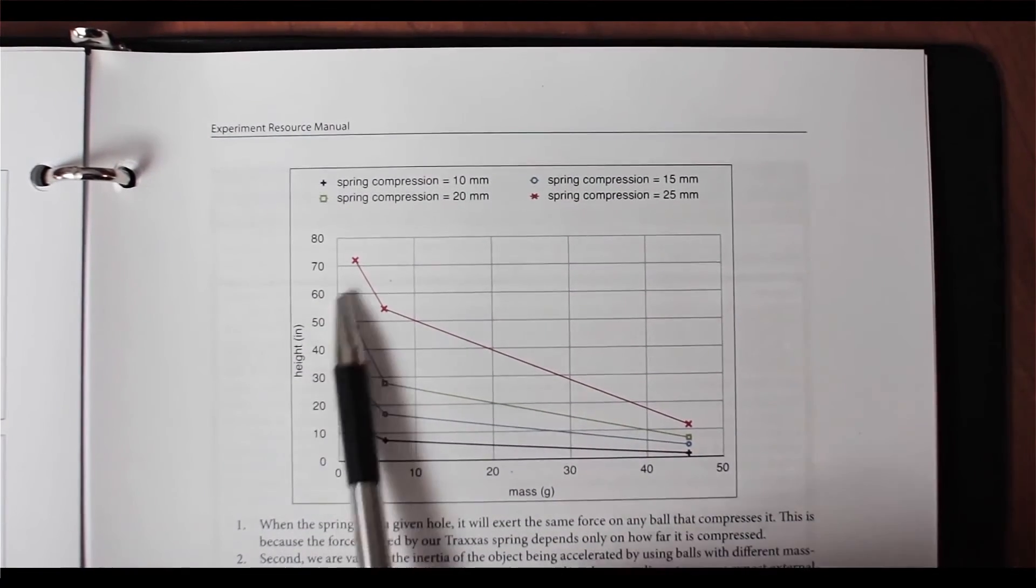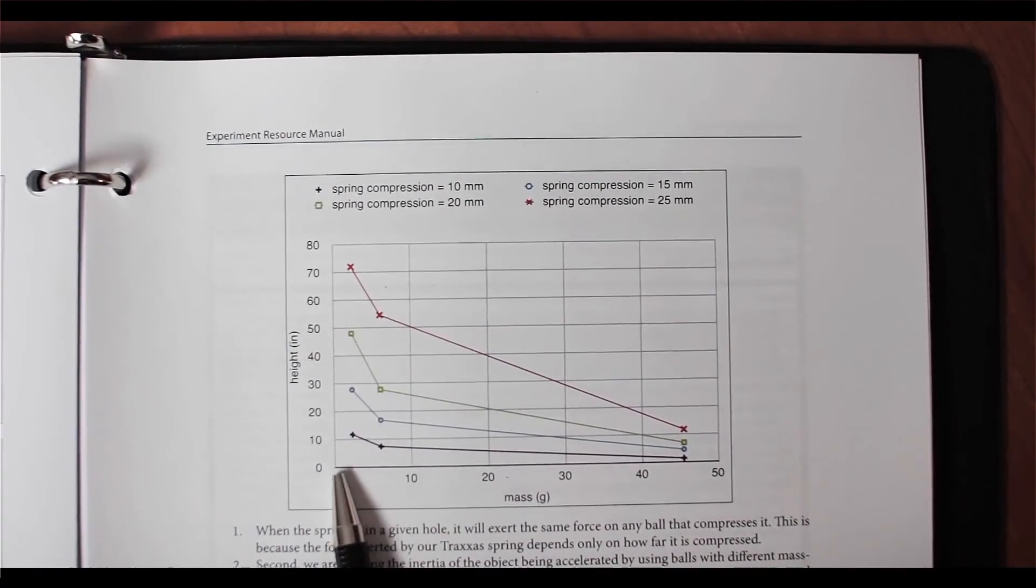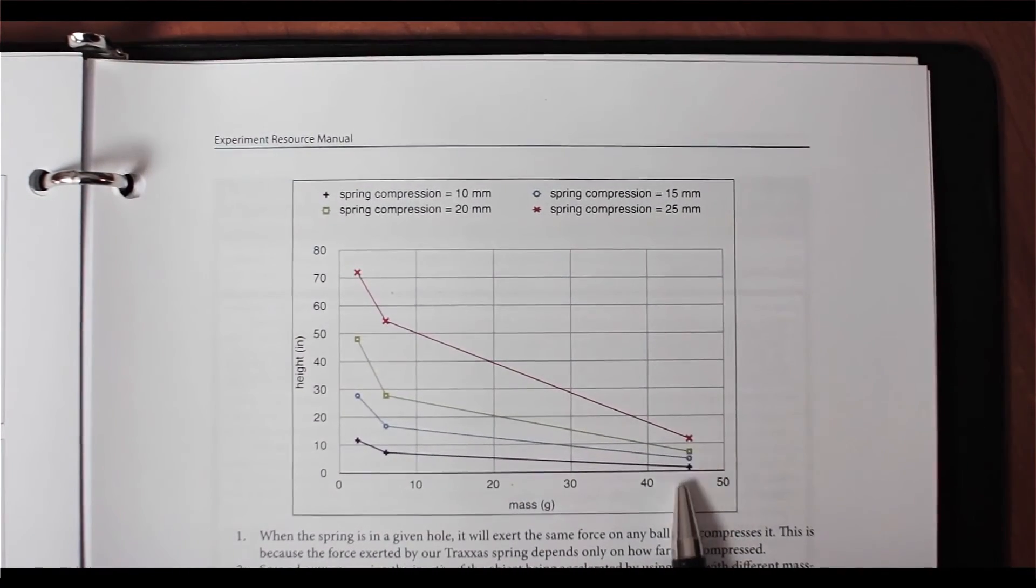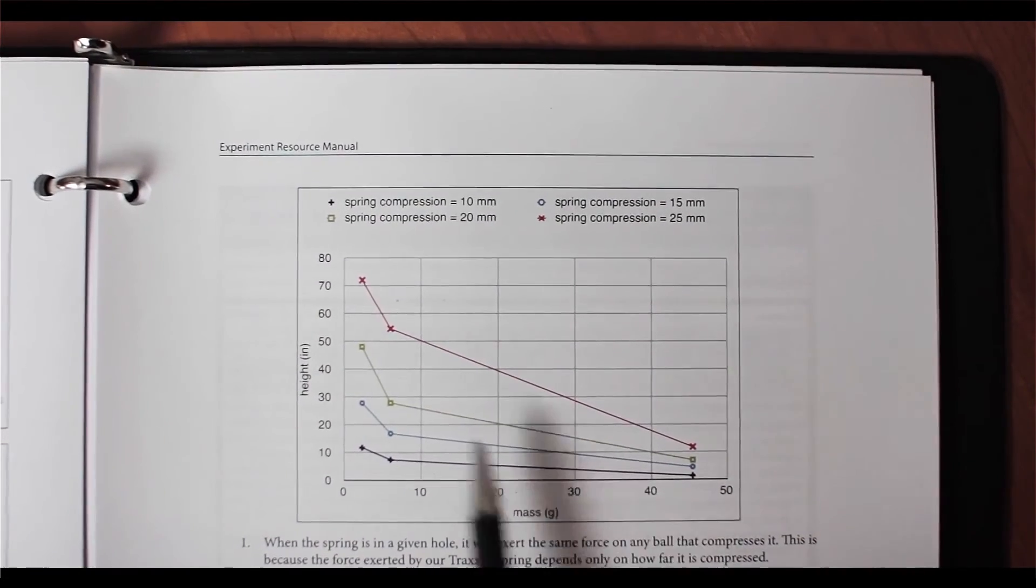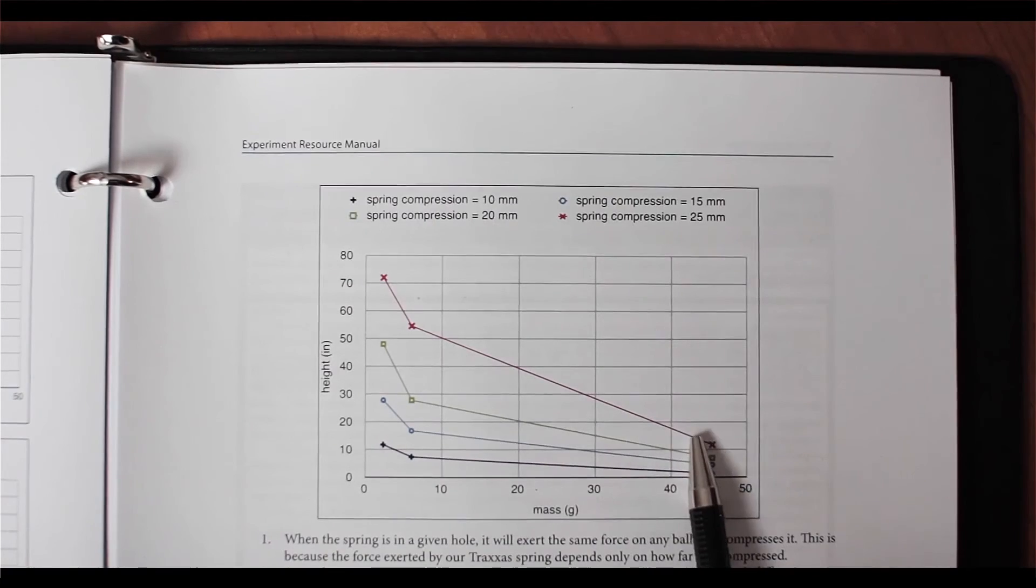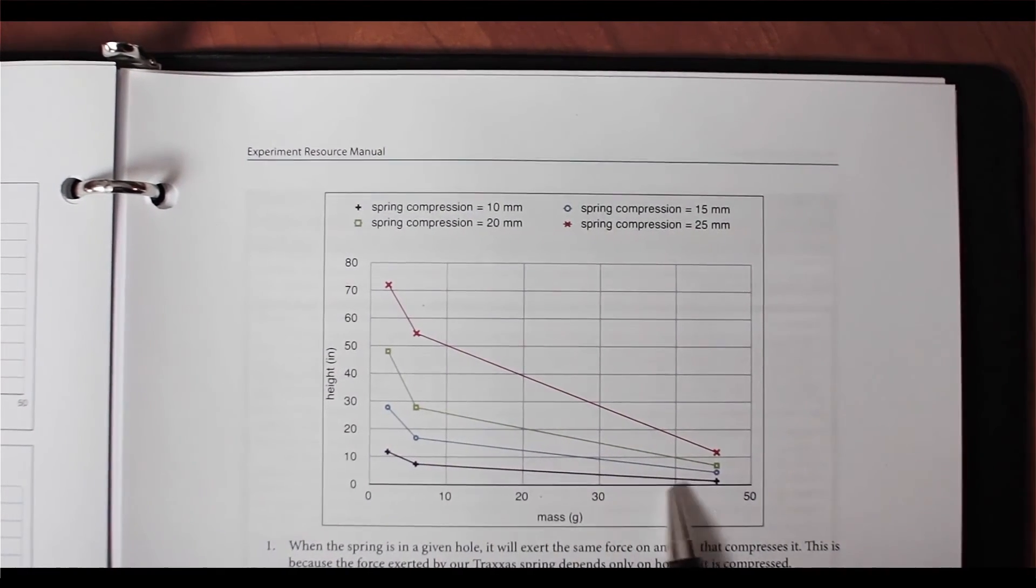So we see in every case the ping pong ball goes highest, the wooden ball next highest, and the golf ball the lowest. Each curve has the same shape, higher curves for higher forces, lower curves for lower forces.